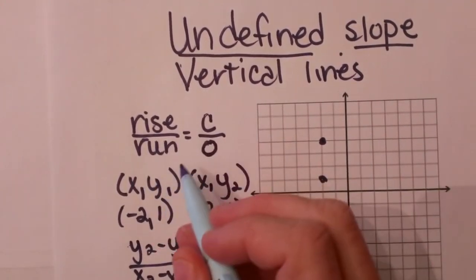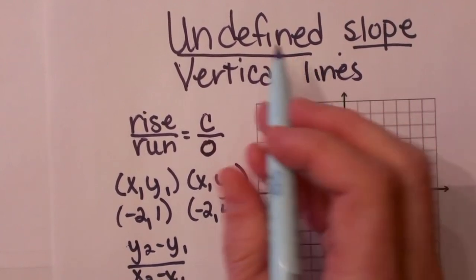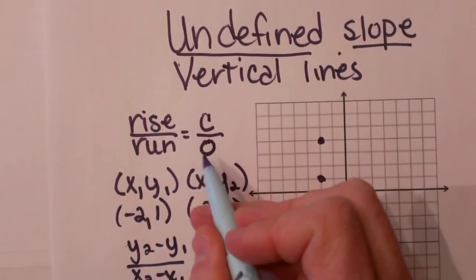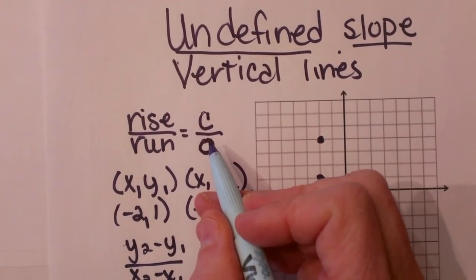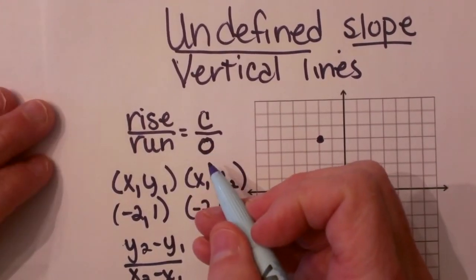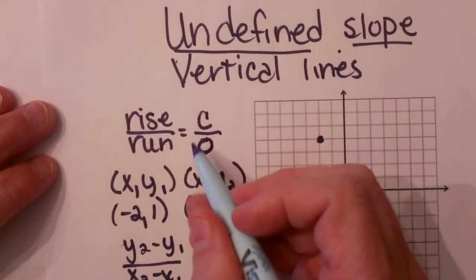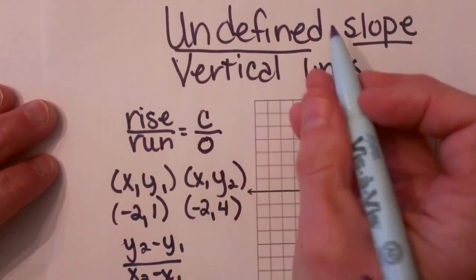Now the one characteristic of a vertical line that has an undefined slope is we have a zero in the denominator, and that is what makes it undefined. Any time you have a zero in the bottom of a fraction, we can't evaluate that, so we consider it undefined.